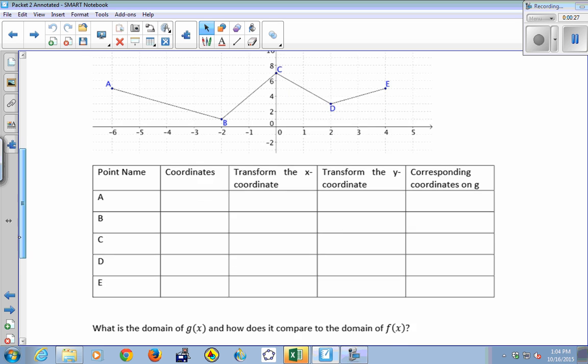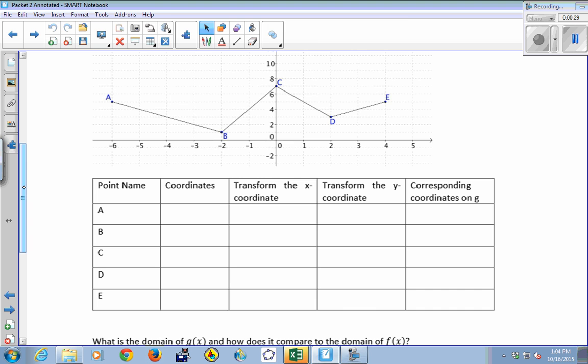So let's start just by putting down the coordinates of the original points. Okay, so a is negative 6, 5, and b is negative 2, 1, c is 0, 7, d is 2, 3, and e is 4, 5.